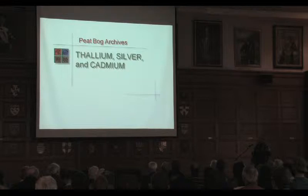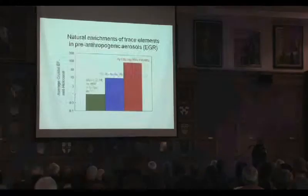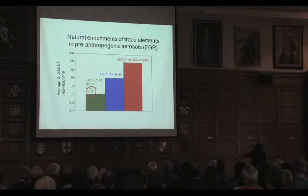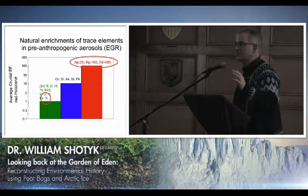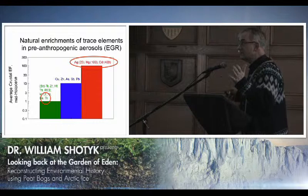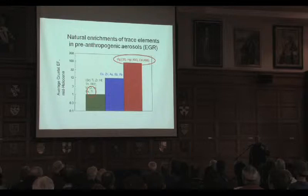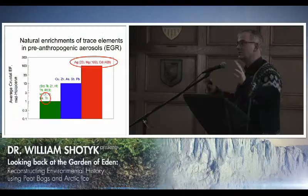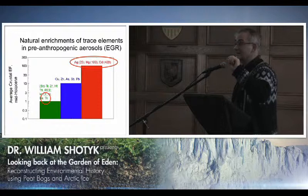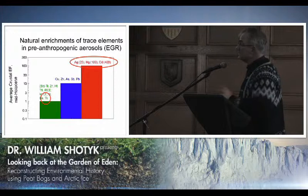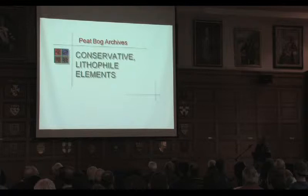Thallium, silver, and cadmium — this is the problem when you start with the periodic table: every element is fascinating. Thallium, if we look at its concentration in peat samples for thousands of years, follows scandium perfectly — it can be explained easily by soil dust. But if we look at silver or cadmium, it's remarkable: during the middle of the Holocene climate optimum we have our highest enrichments of silver and cadmium. They have nothing at all to do with atmospheric soil dust — it's a completely different story, which we don't yet understand, but we're working on it.